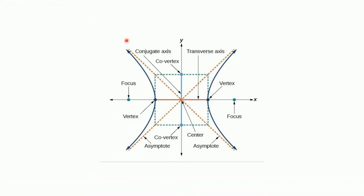This is the complete picture of our hyperbola. These two curves are the hyperbola. This is a vertex, this is also a vertex. This is a focus, this is also a focus. This is a co-vertex and this is a co-vertex. The straight lines you can see here are asymptotes — they continue infinitely, but the curve will never cut these asymptotes. So we have two asymptotes passing through the center.